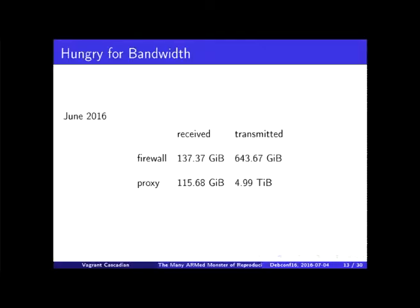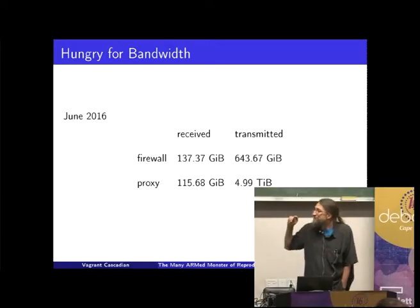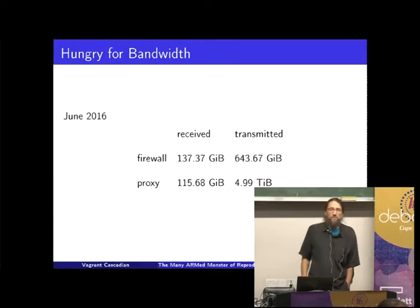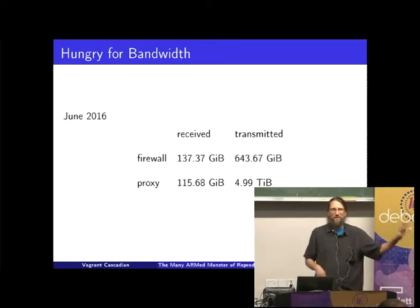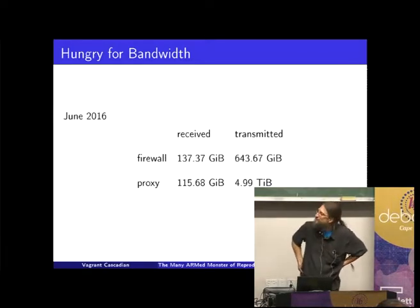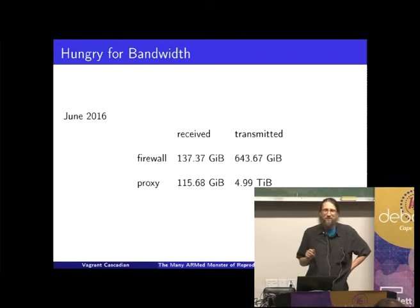This uses a fair amount of bandwidth, and I didn't really think about this when I started the project. We download about 100-some gigabytes of source packages every day. But the real surprise is how many we upload — for June, we uploaded over half a terabyte of binary packages, because we build them twice and then upload somewhere for comparison. The proxy server I set up — an apt caching proxy server — delivered almost five terabytes of data in June. So the proxy server is working pretty well. We started hitting near the bandwidth limits of my ISP at one point, and they never complained, which I'm glad about.